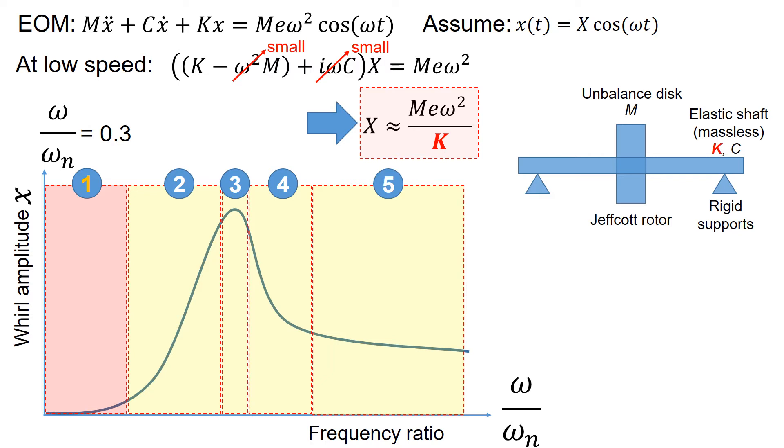This simplified equation indicates that if you have a high shaft stiffness K, the amplitude motion of the rotor can be substantially reduced. So intentionally designing the shaft with high stiffness is very important when you are designing the machine that mainly operates below first natural frequency.